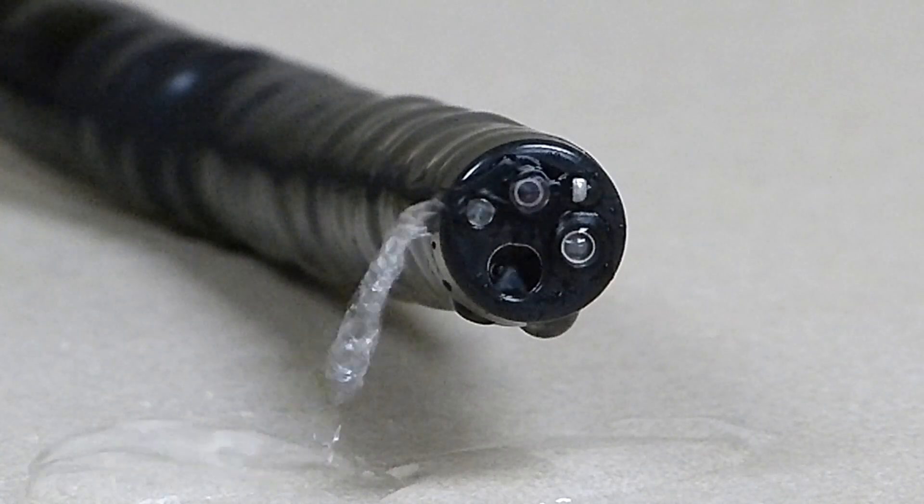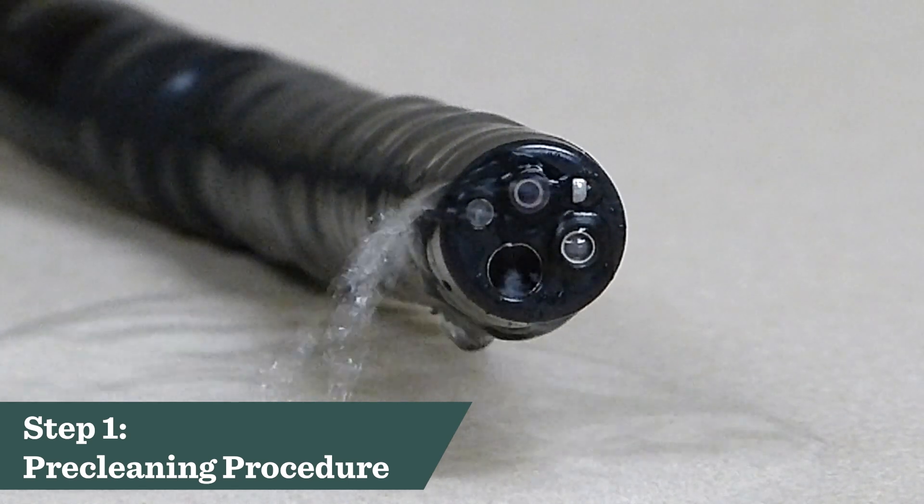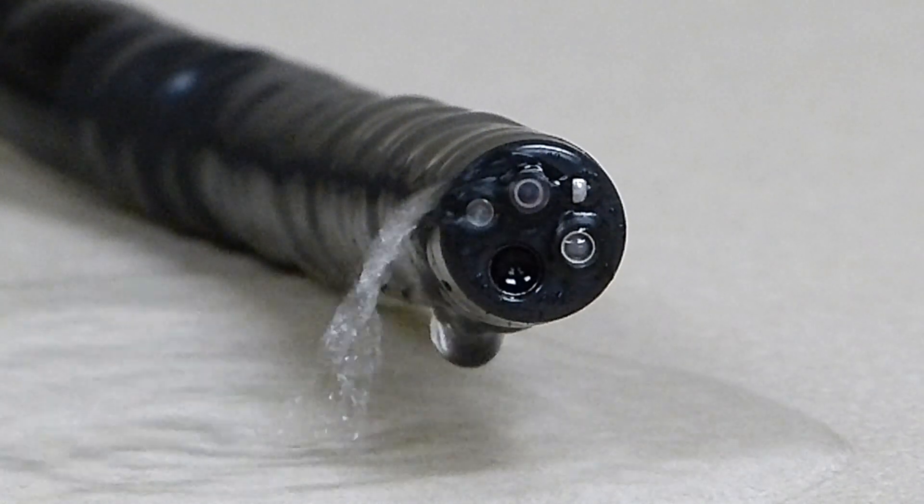So let's get started. The first step of the process is to flush out the air water channels to remove any debris in the channels and from the end of the scope.